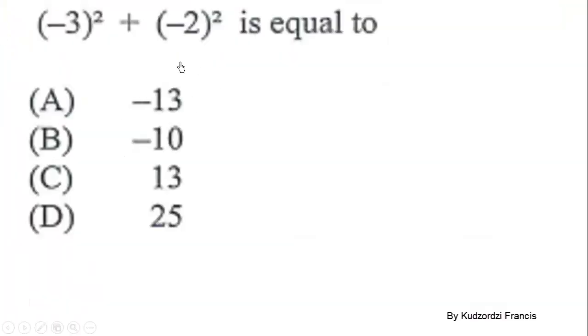We are continuing with May 2019. Negative 3 squared plus negative 2 squared is equal to—when we square a number it means the number times itself, so negative 3 times negative 3 plus negative 2 times negative 2. This gives us 9 plus 4, which equals 13.